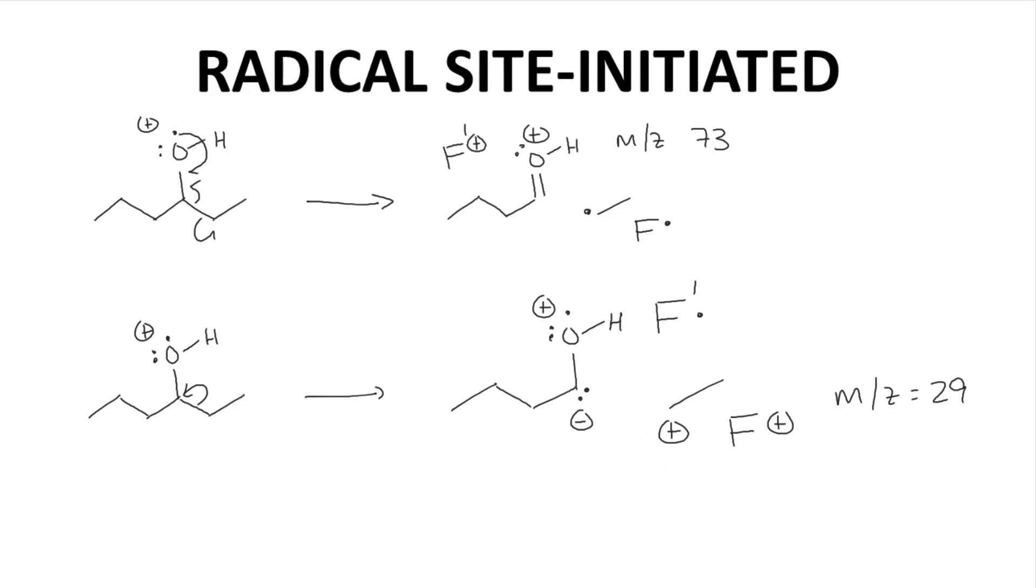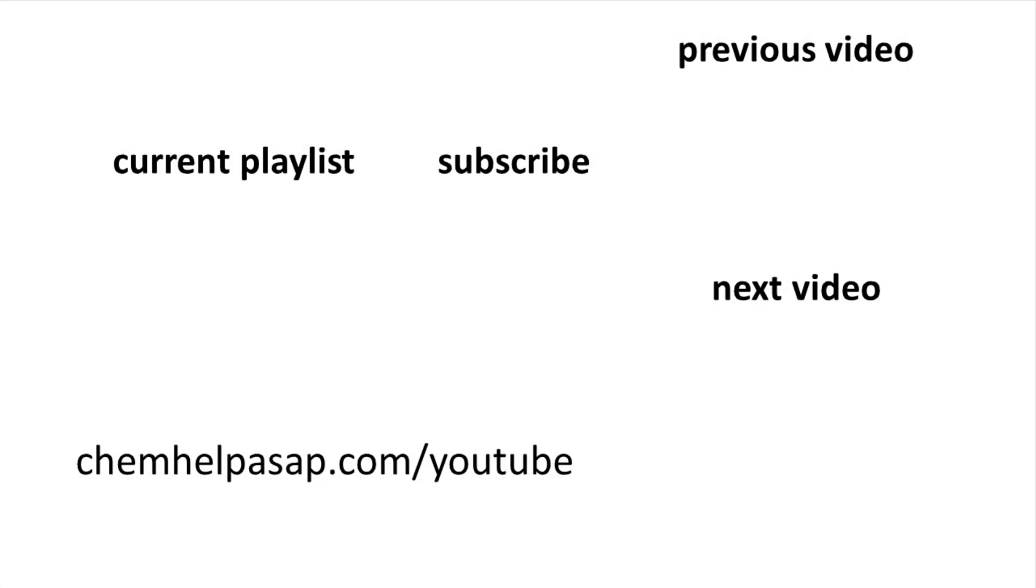Again, the favored cation depends on the relative stabilities of the pairs of fragments. We have other bonds that could also undergo radical site-initiated cleavage, and breaking those other bonds would generate even more possible fragments. Almost every molecule has many different possible fragmentations, but usually one or two will dominate in the mass spectrum. That was a review of fragmentation through charge and radical site initiation – two of the most common fragmentation pathways.